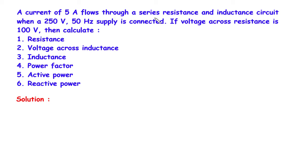A current of 5A flows through a series resistance and inductance circuit when a 250V, 50Hz supply is connected. If the voltage across the resistance is 100V, then calculate: number 1 resistance, number 2 voltage across inductance, number 3 inductance, number 4 power factor, number 5 active power, and number 6 reactive power.